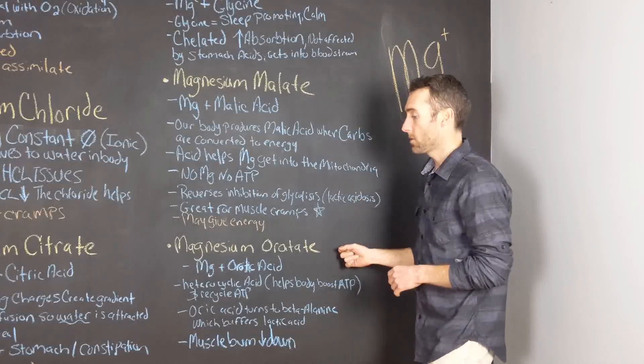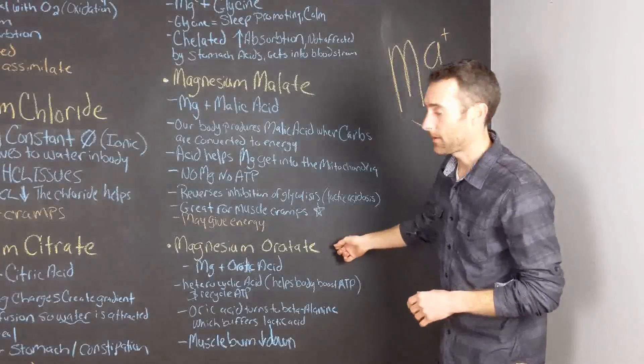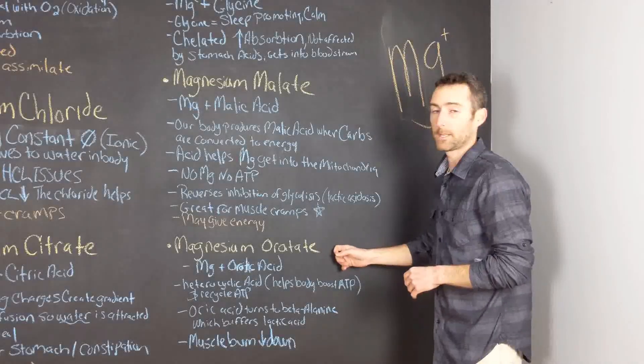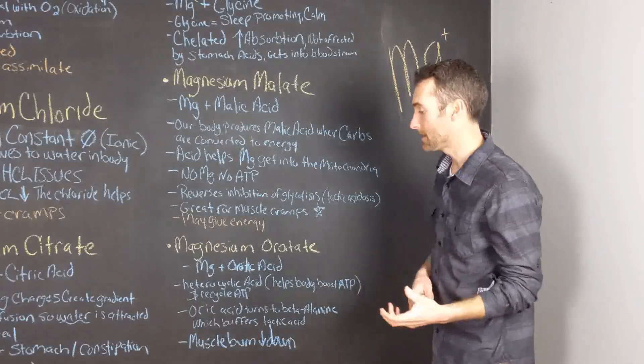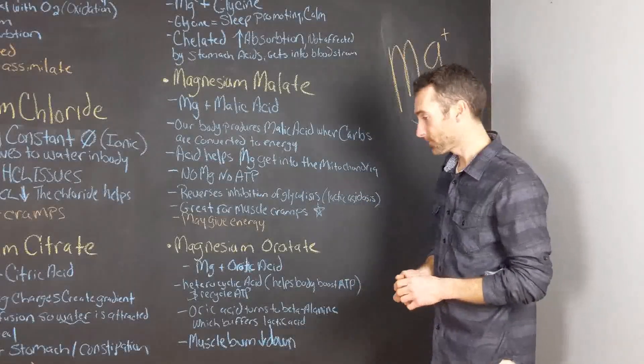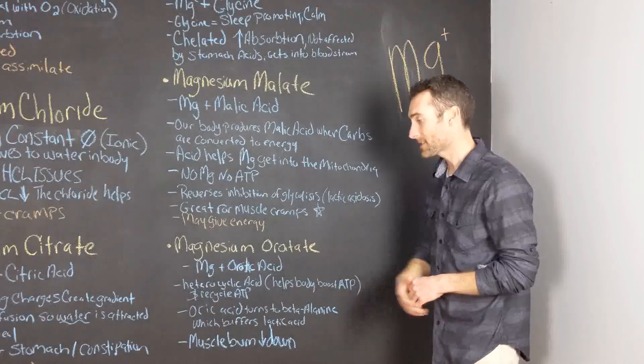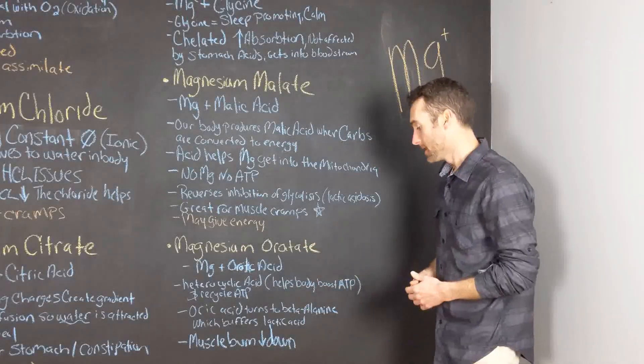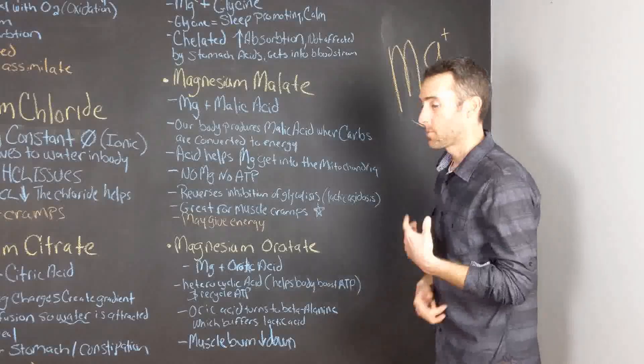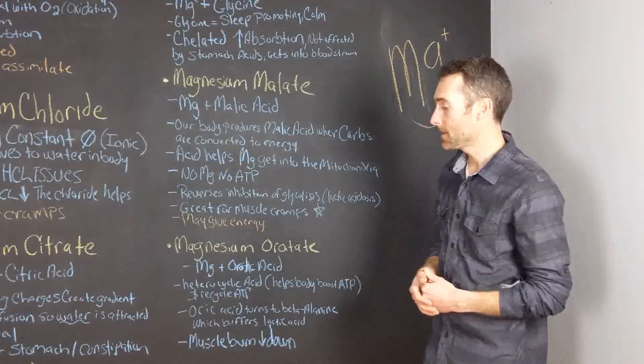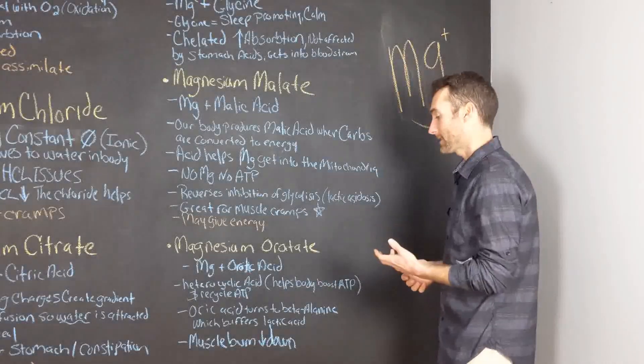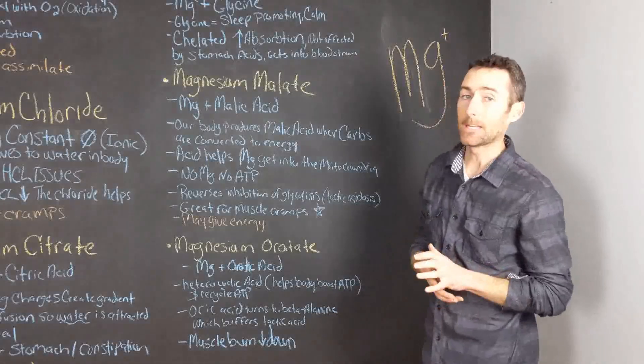The next form of magnesium I want to talk to you about is magnesium orotate. Magnesium orotate is magnesium bound to orotic acid. Orotic acid is a heterocyclical acid. It helps your body produce ATP and recycle ATP.